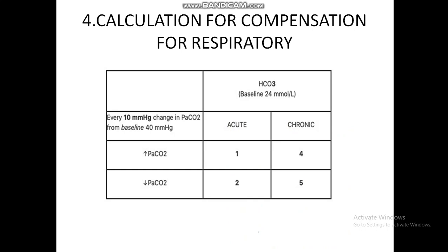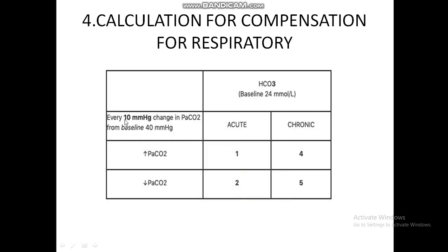The fourth step is to calculate compensation. When there is a change in PCO2 (respiratory system), the body compensates by changing HCO3 through the kidneys. PCO2 is regulated by the lungs; HCO3 by the kidneys. In respiratory acidosis, for every 10 mmHg rise in PCO2 from baseline (24), HCO3 rises by 1 mEq/L in acute conditions and by 4 mEq/L in chronic conditions such as COPD.